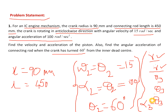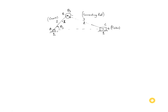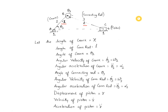We assume a slider crank mechanism and define the angles theta 2 and theta 3. Link 1 is the ground or support for the piston movement, link 2 is the crank, link 3 is the connecting rod. Length of the crank is indicated by x and the length of the connecting rod by L.